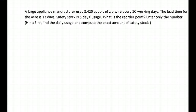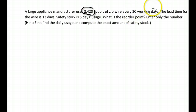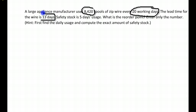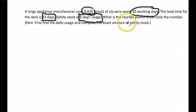Let's try another example. A large appliance manufacturer uses 8,420 spools of wire every 20 working days. The lead time for wire is 13 days. The safety stock is five days of usage. We want to be careful on that one — what's the reorder point?